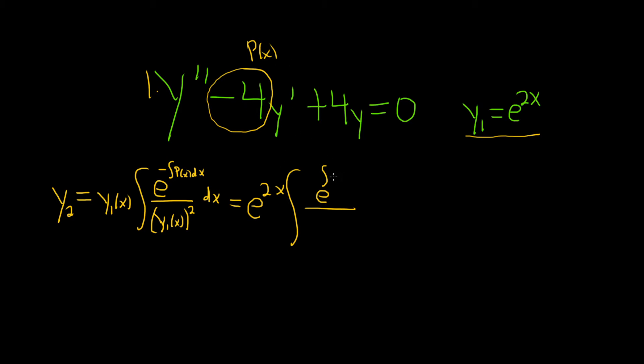So that's your big p, so it'll be negative 4 dx. And then there's another negative here from the formula, and on the bottom we have e to the 2x squared, so it'll be e to the 2x squared dx. A little bit nasty, but not too bad.